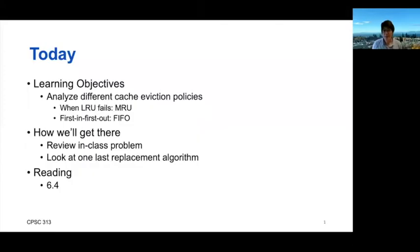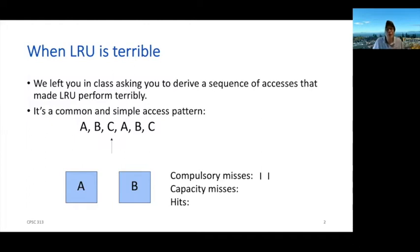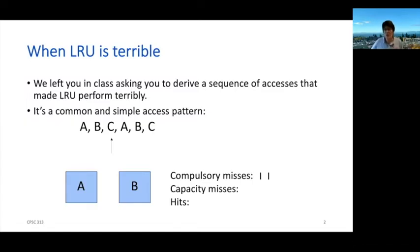If you haven't yet done Wednesday's in-class exercise, you should probably delay watching this video. It's pretty short — you can watch it between Wednesday and Friday class — but I really want you to try Wednesday's in-class exercise first. At the end of class, I posed the question: what's an access pattern that will make LRU behave abominably? We're looking for an access pattern where LRU will give you exactly zero cache hits. It turns out that pattern is remarkably simple and common: just iterating over the same pages or objects or cache lines when the set of objects is just larger than the cache.